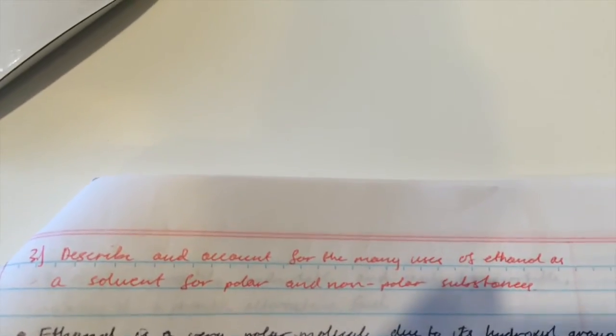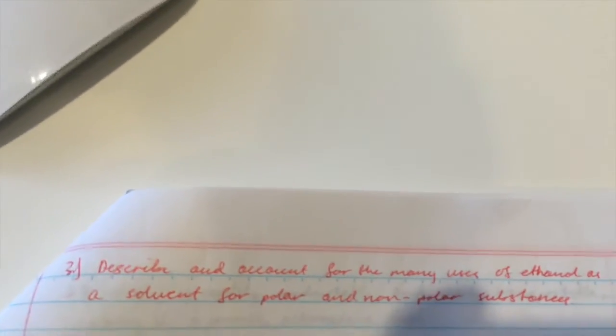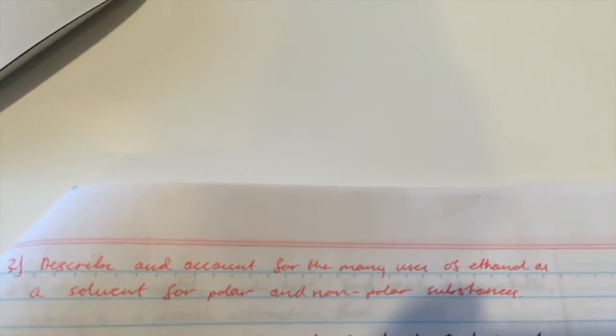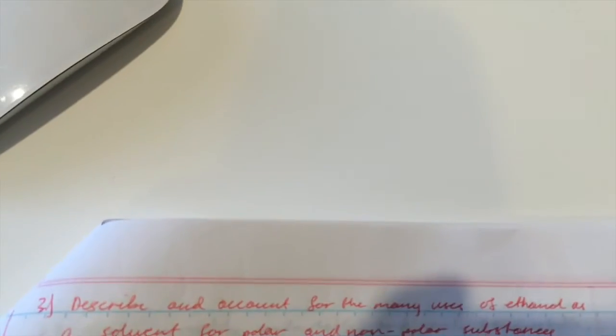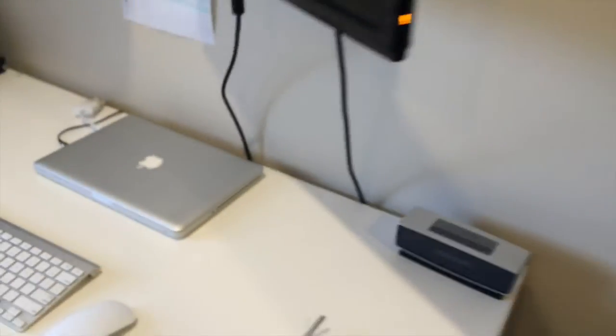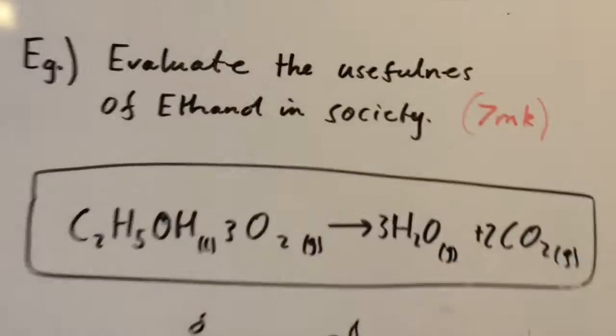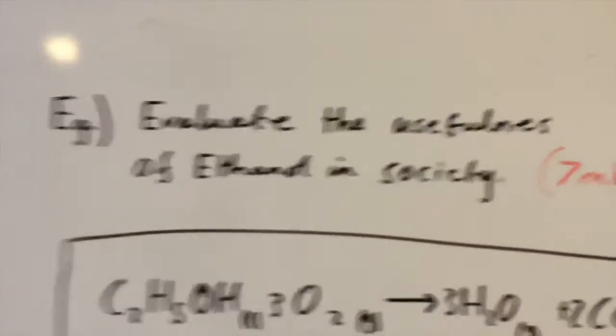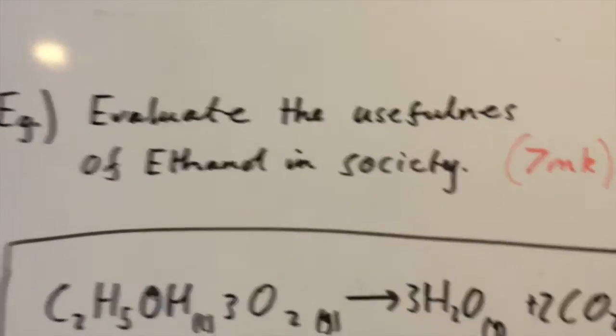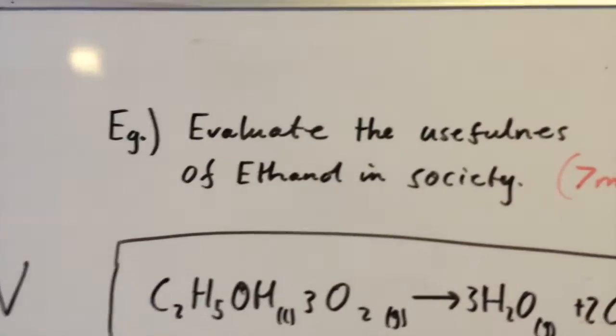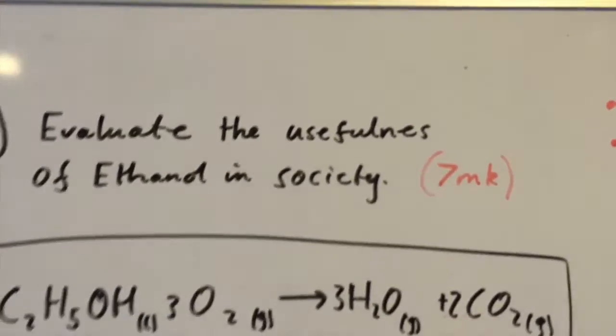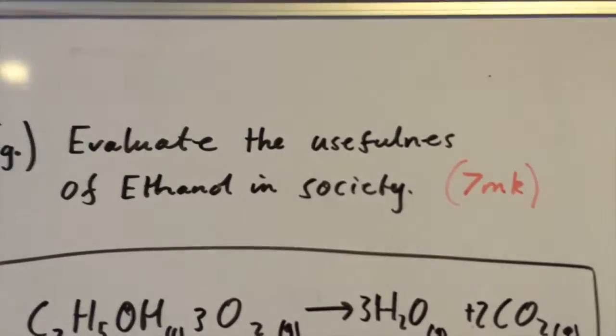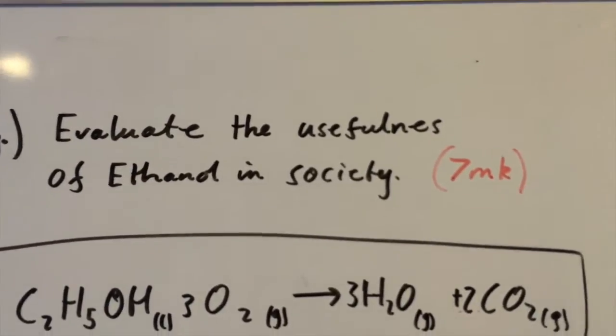So basically a good example here for you is from chemistry, it says describe an account for the many uses of ethanol as a solvent for polar and non-polar substances. And basically what you want to do, you want to take this information that you would have written down here in your summary and you want to apply it to a question. So basically what I'm going to go through is sort of how I would approach a question such as this and hopefully you guys can sort of take away the approach that I've gone about and use it in questions in other subjects as well.